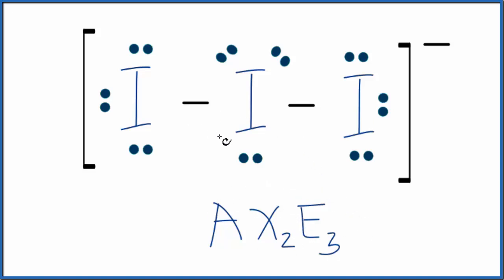And again, I3 minus, it's a linear molecule. And the bond angle, it would be 180 because it's just straight through linear. This is Dr. B with the molecular geometry for triiodide, I3 minus. Thanks for watching.